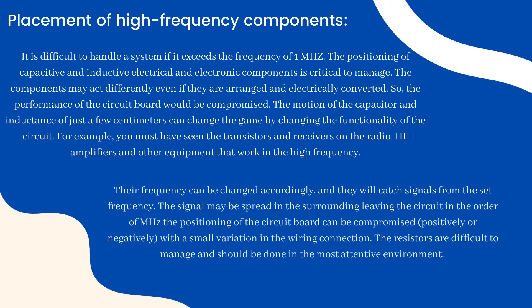Placement of high frequency components: it is difficult to handle a system if it exceeds 1 MHz. The positioning of capacitive and inductive electrical and electronic components is critical to manage. Components may act differently even if they are arranged and electrically converted, compromising the circuit board's performance. The movement of a capacitor or inductance by just a few centimeters can change the functionality of the circuit. For example, transistors, receivers on radios, HF amplifiers, and other equipment that work at high frequency can have their frequency changed, and they will catch signals from the set frequency. Resistors are difficult to manage and should be handled in the most attentive environment.